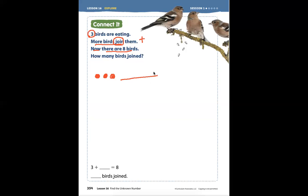We don't know how many more. So three has to be a part, and the more that came has to be a part. The total of how many birds there are all together is this part which is three.